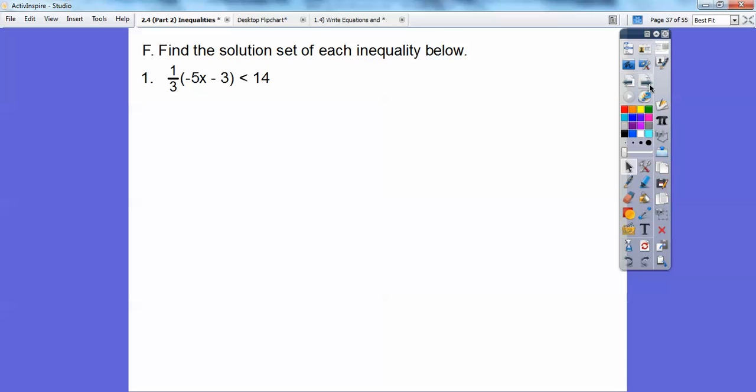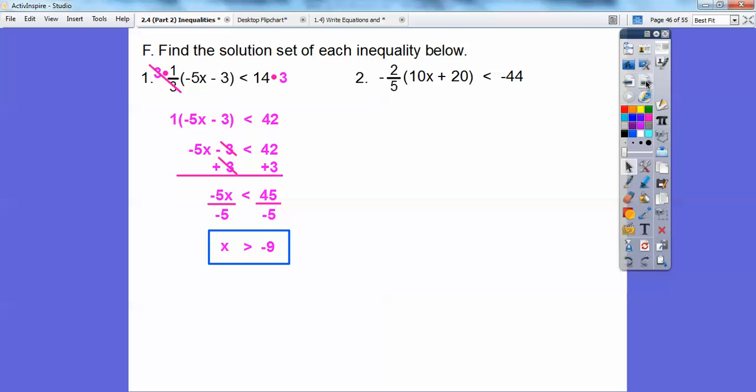Let's find the solution set of these and we'll wrap it up. When you have a fraction, the textbook suggests to distribute the one-third through, but I tell my students, what's freaking you out is that denominator. So let's get rid of it. Multiply both sides by 3, the common denominator, and it goes away. You're left with just that numerator, which is 1 times negative 5x minus 3. Over here it's 14 times 3. One times anything is just that anything, so I can drop those parentheses. Now add 3 to both sides. Then divide by negative 5. Remember, when we divide by negative, it flips that inequality. So we get x is greater than negative 9.